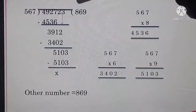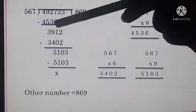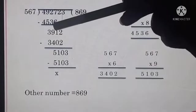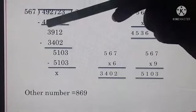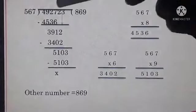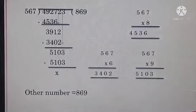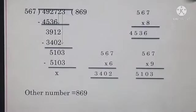So 567 times 8 we will do. Now subtract: 7 minus 6, 1. 12 minus 3, 9. 8 minus 5, 3. 4 minus 4, 0. Now we will take 2 here. Now 2 is taken, 3912.